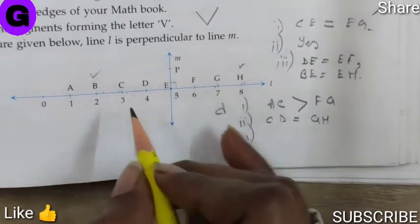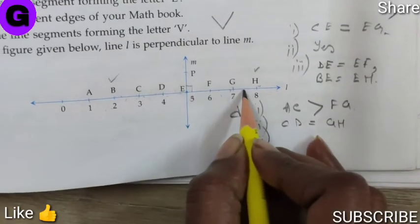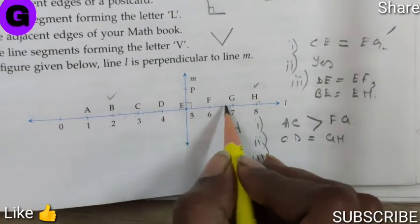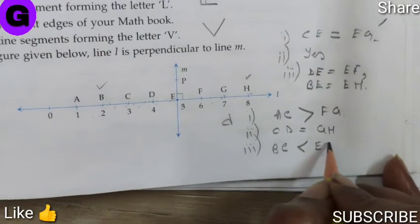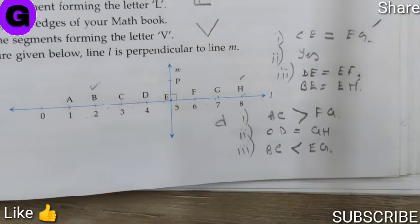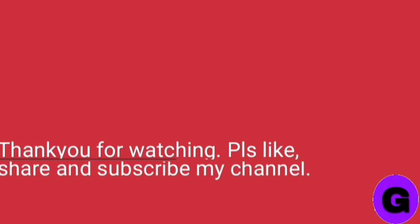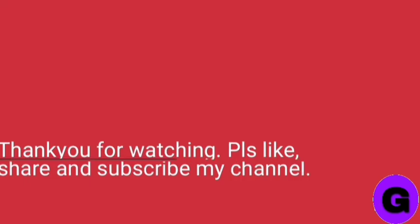Last one. BC is smaller than EG. Yes, of course. BC is just one space here and EG one and two. So BC is smaller than EG. So here we come to the end of exercise 11.3. Thank you. Thanks for watching my video and please don't forget to like, share and subscribe my channel. Press the bell icon and select all for every update. Thank you.